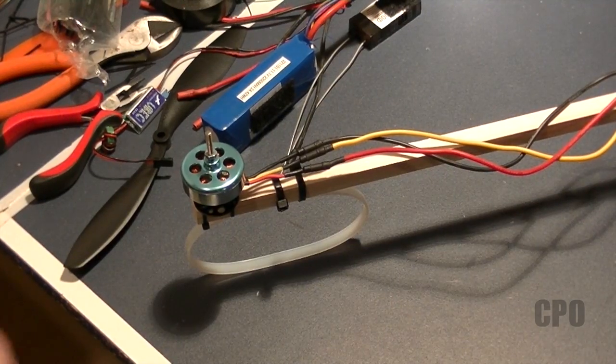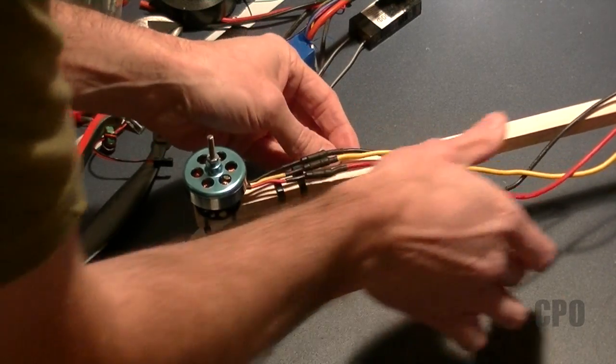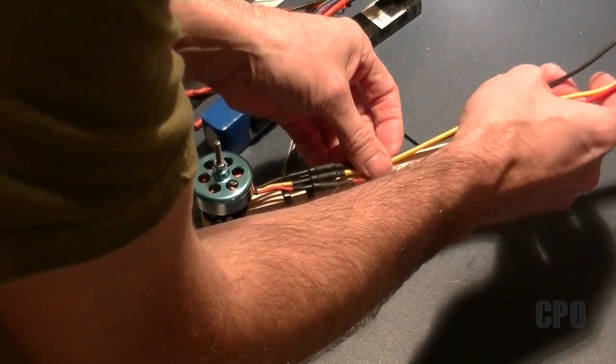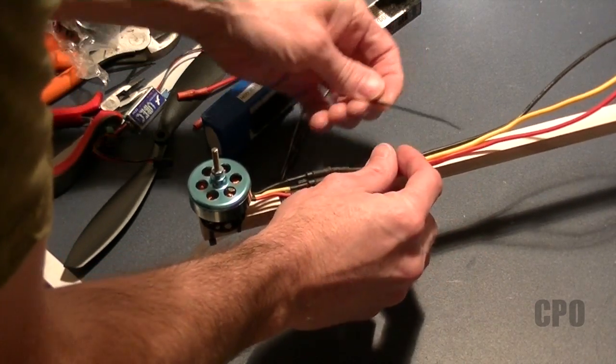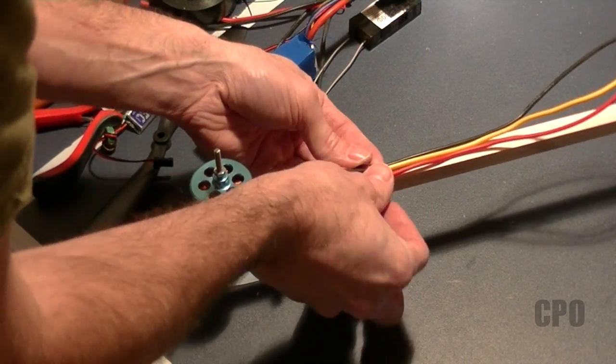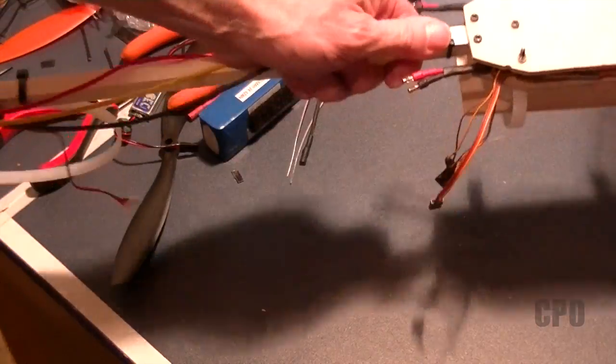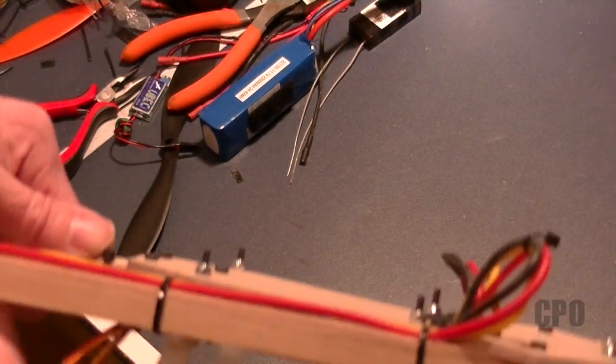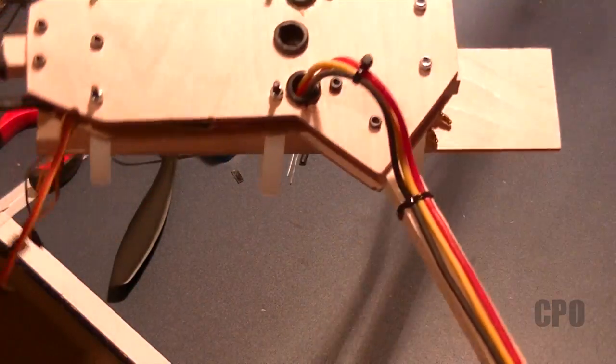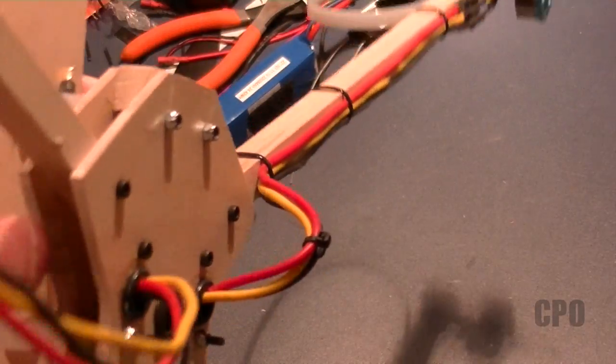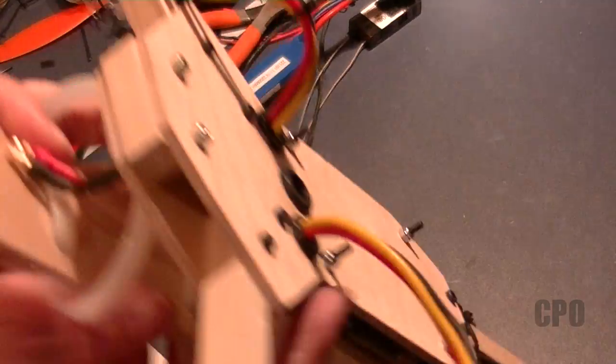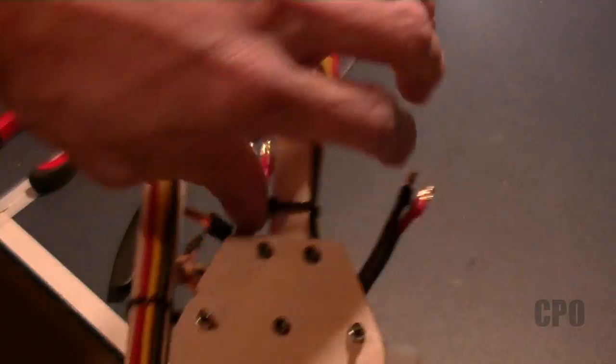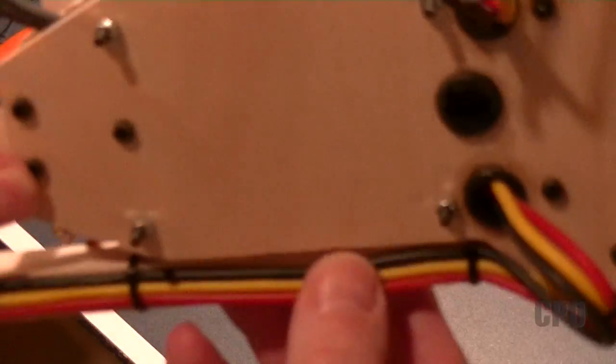So now the last thing I want to do before I start working on getting the KK board installed is go ahead and fasten down the wires on the arms, the motor wires. Now that I know the motors are spinning in the direction that I want them to, I can go ahead and button these down. I decided to use three zip ties on the arm and then one in the middle of the loop. It stays out of the way when the arms fold up and still stays neat when the arms are extended. So I'll do the same thing to the left arm, and then I'll tidy up the back arm.